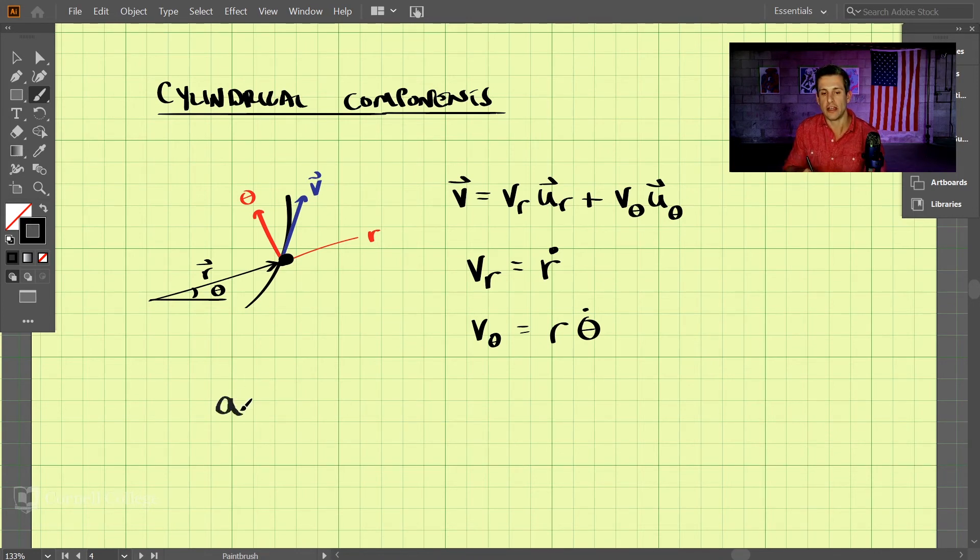Now if we write down the acceleration vector, it gets more complex. So we have the acceleration in the radial direction times the unit vector in the radial direction plus the acceleration in the transverse direction times the unit vector in the transverse direction.